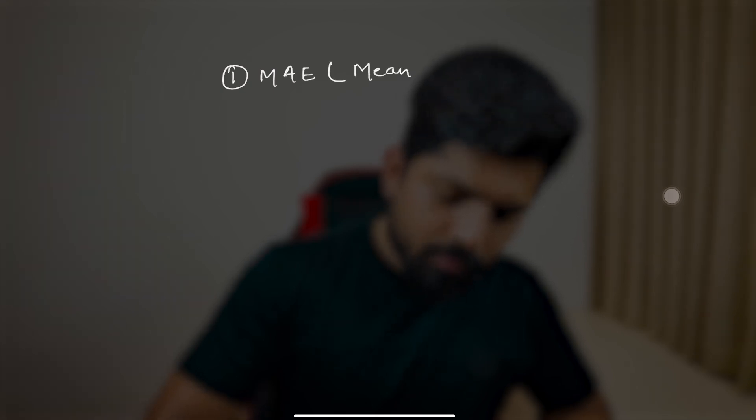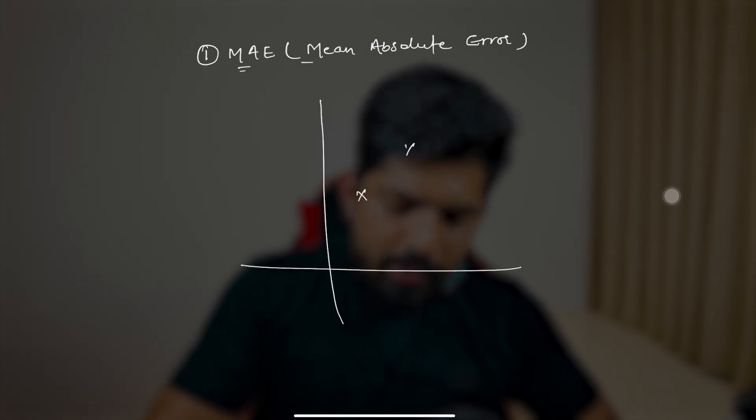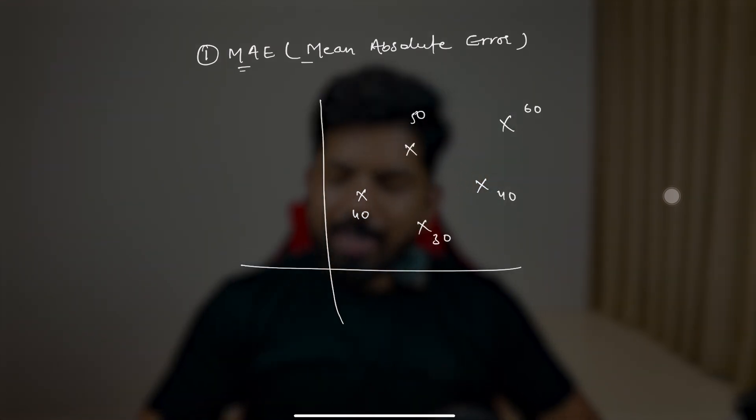The first metric is Mean Absolute Error (MAE). Previously we learned that regression involves an independent variable and a dependent variable — input and output. For now, suppose you have only one value, the output, and you plot it on a chart. These values are something like 40, 50, 30, 40, and 60 — random numbers.